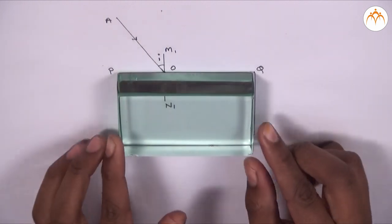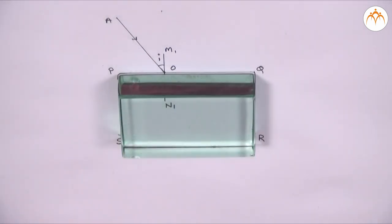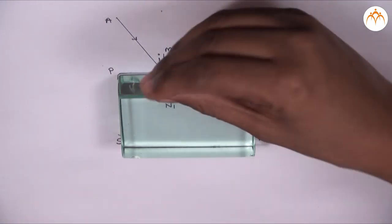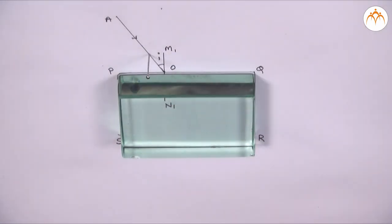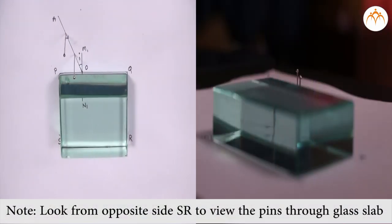Then we place the glass slab in such a way that it matches PQRS. We place two paper pins 1 and 2 on the ray AO. Look through the slab from other side SR.